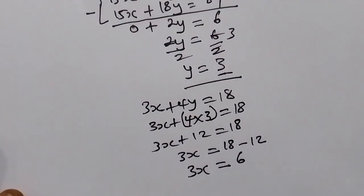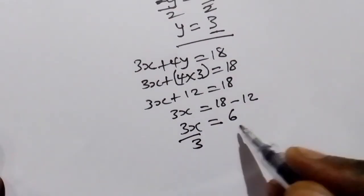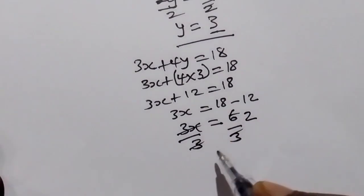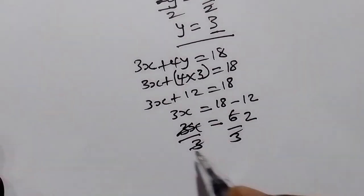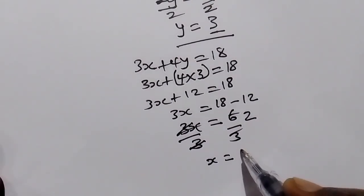3x is equal to 6. We divide by 3. X is equal to 2.